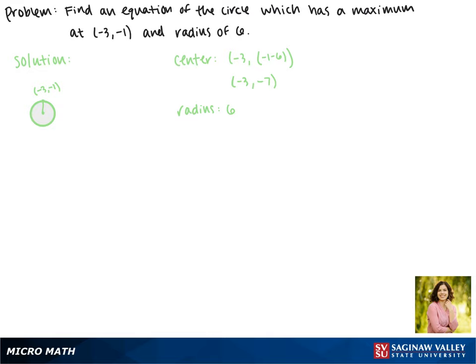Let's remember that the standard form of a circle is x minus h squared plus y minus k squared equals r squared, where h,k is the center and r is the radius.